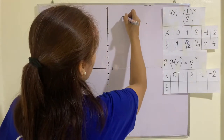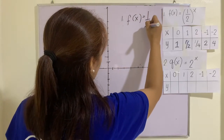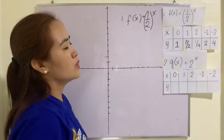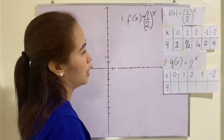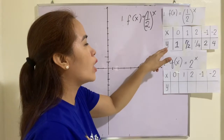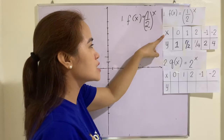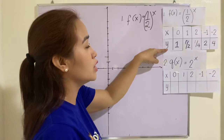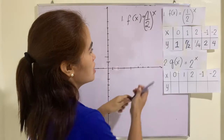Say for example, f of x is equal to 1/2 raised to x. This one is an equation, this one is a table of values, and we will be graphing it later. To solve for y, remember that x is the independent variable — you can assign any values for x, and y is the dependent variable, meaning you need to solve for y after assigning values for x. Let's do 0.